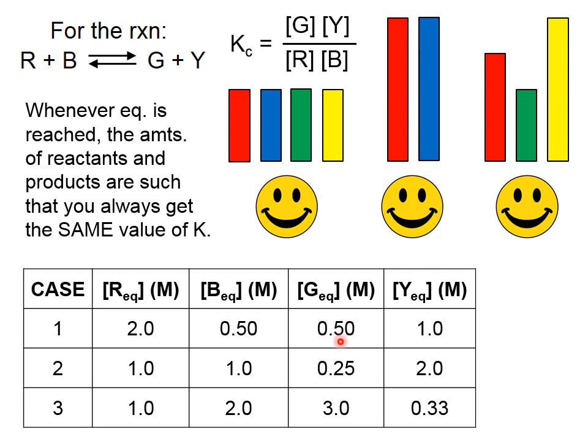So if we go down to our table here, the concentration of green is 0.5, concentration of yellow is 1, so the numerator is equal to 0.5, 0.5 times 1, divided by 2 and divided by 0.5. What does that come out to? Well, we've got on the top, we've got 0.5 divided by 1, so that's going to be 0.5.